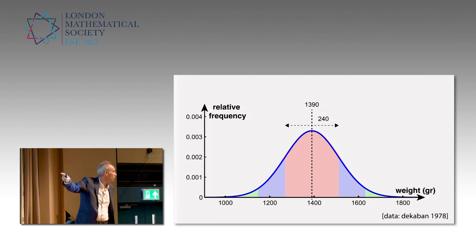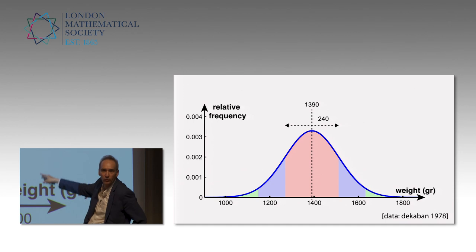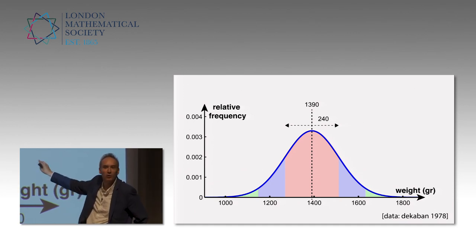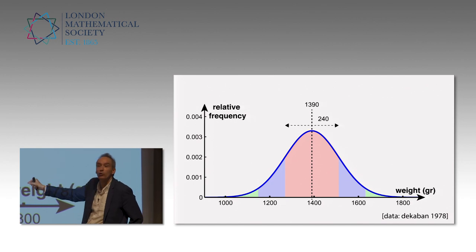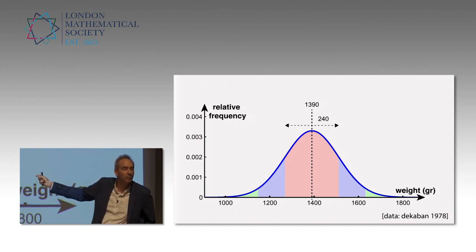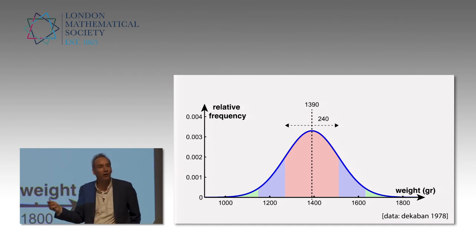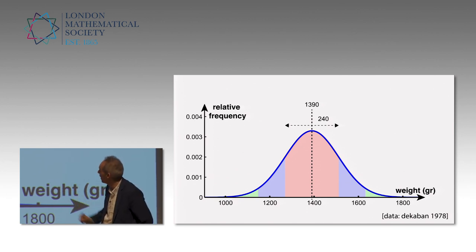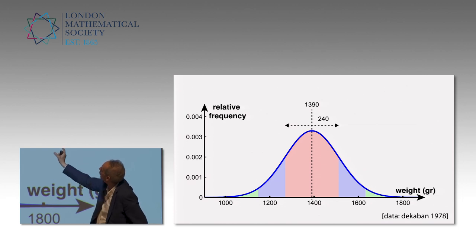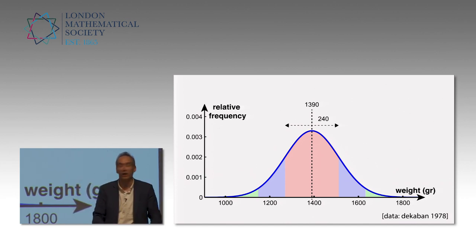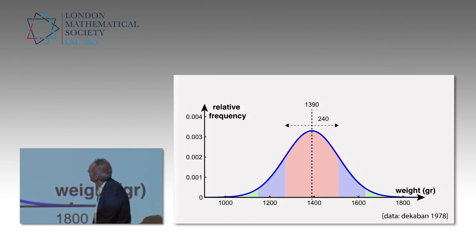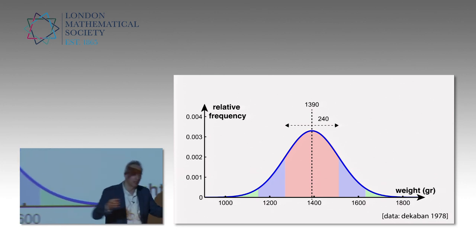1,400 grams, standard deviation of 240. What does that mean? This curve is the Bell curve, the famous Bell curve. It was developed around 1840 by Adolf Quetelet. He was the first to show that the distribution of population in Belgium of height would fall on this curve. It's also called the normal distribution. But in mathematics, we call it the Gaussian, because Gauss was the first to describe the distribution of error and found that curve as a result.